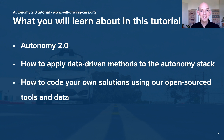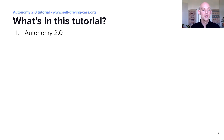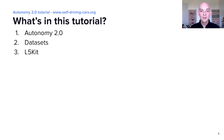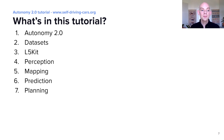Section by section in the tutorial, we start off by introducing Autonomy 2.0 and contrasting it against Autonomy 1.0. Then we introduce data sets and the toolkit which you'll need in order to follow along on your own for the next sections. We go through how to apply data-driven methods to each part of the Autonomy stack: perception, mapping, prediction and planning.